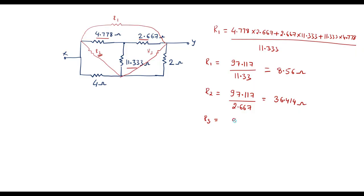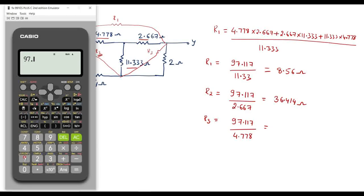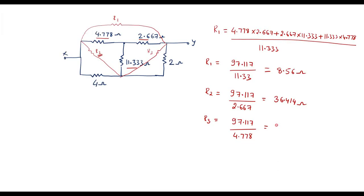R3 = 97.117 / 4.778 = 20.325Ω. The denominator for R3 is its opposite star resistor, 4.778Ω. All values are in ohms.